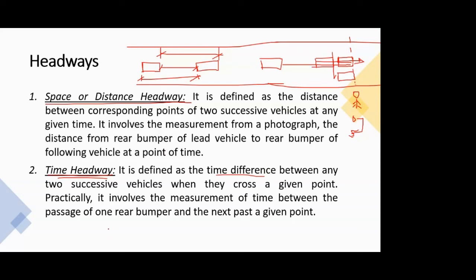When we started traffic engineering, two terms were introduced: macroscopic and microscopic characteristics. Macroscopic characteristics consider the traffic stream as a whole, looking at aggregate measures like flow, speed, and density across the entire stream.